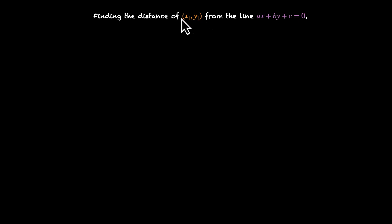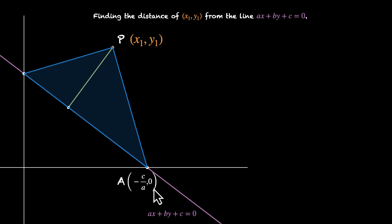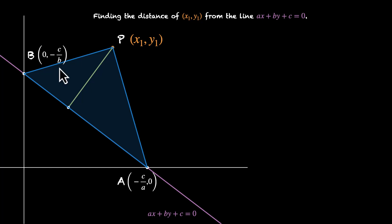Now let's take things one step further — finding the distance of any point x1, y1 from any line ax plus by plus c equals 0. The process remains exactly the same. We have this triangle and this is the length we are figuring out. The equation is ax plus by plus c equals 0, and the point is x1, y1. Point A is (−c/a, 0) and point B is (0, −c/b). If you plug y equals 0 into the equation, you get x equals −c/a — that's the x-intercept. If you plug x equals 0, you get y equals −c/b — that's the y-intercept.